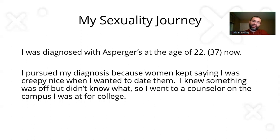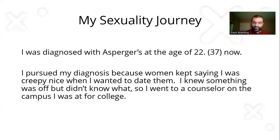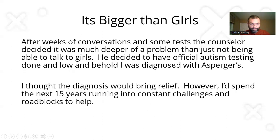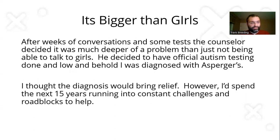Now, my sexuality journey. I was diagnosed with Asperger's at the age of 22 — I'm 37 now. I pursued my diagnosis because women kept saying I was 'creepy nice' when I wanted to date them. I knew something was off but didn't know what, so I went to a counselor at my college and asked why girls didn't like me. After weeks of conversation and testing, the counselor decided it was much deeper than just not being able to talk to girls, and had official autism testing done. I was diagnosed with Asperger's syndrome. I thought the diagnosis would bring relief, but I'd spend the next 15 years running into constant challenges and roadblocks to getting help.